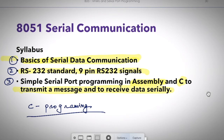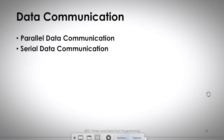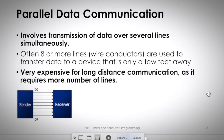What is data communication? Communication means transferring information from one place to another. In electronics, there are two types of data communication: parallel communication and serial communication.